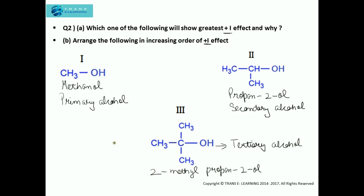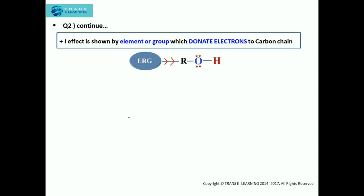We need to find which one has the greatest plus I effect, then arrange them in increasing order. First, what is plus I effect? Plus I effect is the permanent displacement of electrons away from the atom or group which is less electronegative compared to the carbon atom in the carbon-hydrogen chain. An alkyl group is less electronegative than carbon, so it donates electrons towards the carbon chain, resulting in the plus I effect. Groups that donate electrons to the carbon chain show plus I effect.